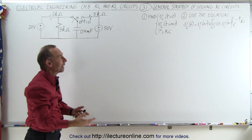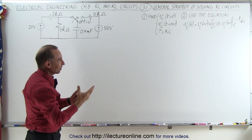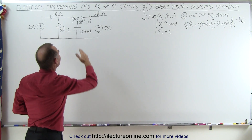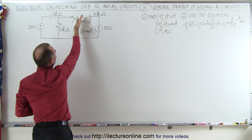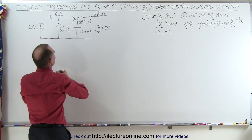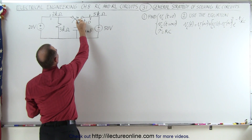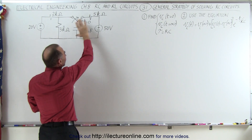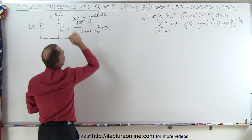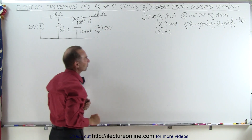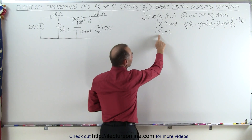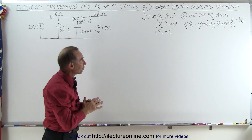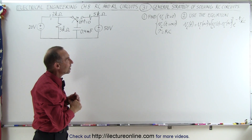A lot of time has gone by — not quite infinity of course, but a very long time after the switch switched positions. We want to know when the current stops flowing, what will be the voltage across the capacitor. And we want to calculate what we call the time constant tau, which stands for R times C.